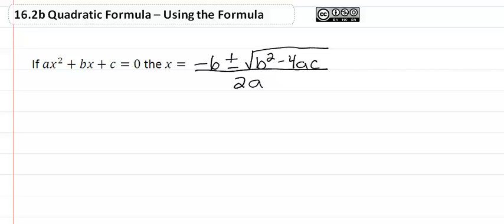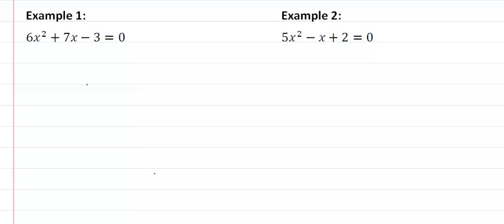Now let's put this formula to work. In example one, we have a quadratic here. We want to identify our a, b, and c first. We need to make sure that they are in descending order. So our six will be our a, seven will be b, and our negative three will be our c.